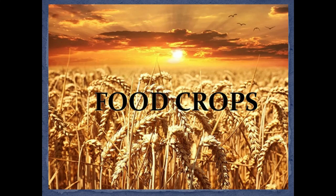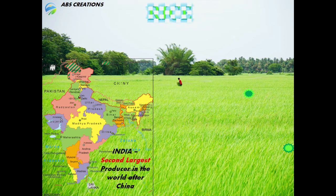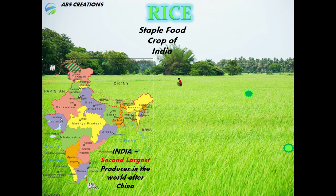The first major food crop of India is rice, also called paddy. Rice is mainly a tropical crop, and India, with its tropical monsoon climate, is ideally suited for growing rice. India stands as the second largest producer in the world after China. This most important food grain is the staple food of a vast majority of people in the eastern and southern parts of the country. It occupies about a quarter of the total cultivated area in the country.